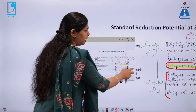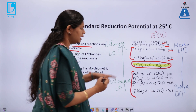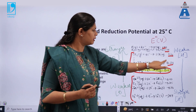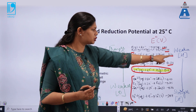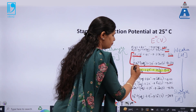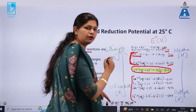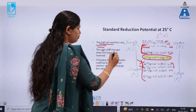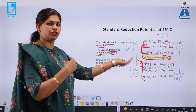For example, if these two cells are connected together, both are shown as reduction reactions. But based on the E° value, the species with the higher E° will get reduced. That means Cl₂ will get reduced and copper will get oxidized in the presence of Cl₂. Both of them are positive. The sign of E° changes when the reaction is reversed.